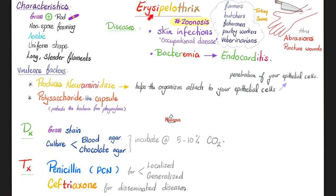Erysipelothrix, or erysipeloid disease, is a zoonosis — an animal infection that is transmitted to humans. If the human had traumatized skin to begin with, such as a farmer, butcher, fisherman, poultry worker, or veterinarian who had an abrasion or puncture wound in the skin, and then they are dealing with animals, this bacteria will jump from the animal to the human, causing a skin disease that mimics erysipelas.